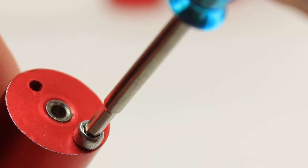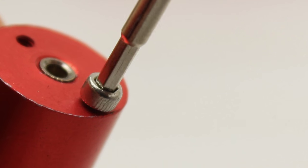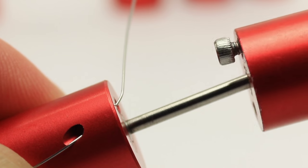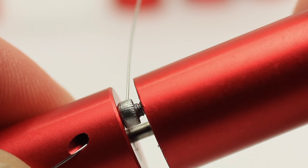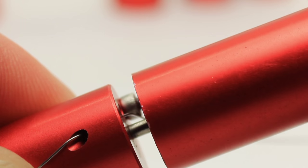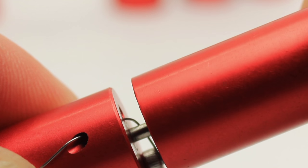Using the screwdriver, loosen the screw to fit your wire size. While holding the wire with your thumb, slide the cap onto the pole and start coiling. Simple as that.